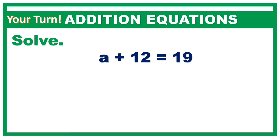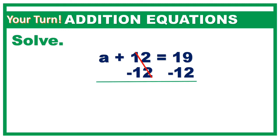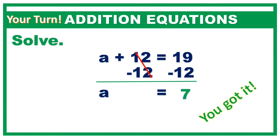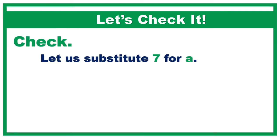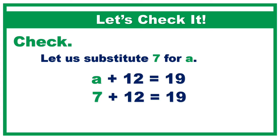Let's check it. Again, we need to isolate A by subtracting 12 on both sides. That cancels 12, leaving A isolated. Just bring down A to the equal sign and the answer to 19 minus 12, which is 7. You got it! Let's check your answer — let us substitute 7 for A. 7 plus 12 equals 19. Correct!